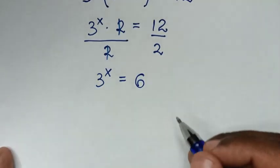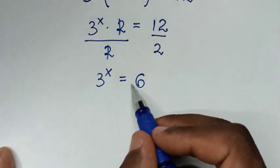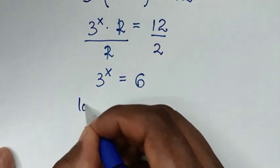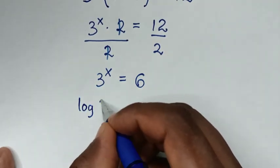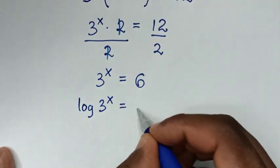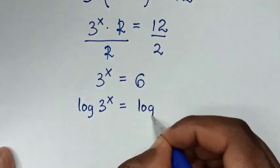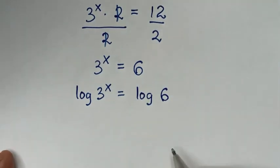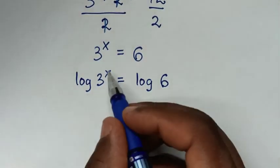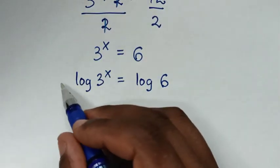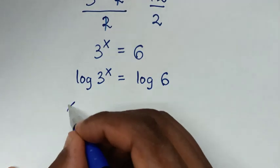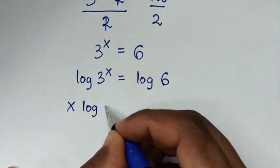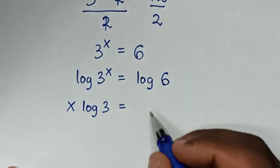From here we'll apply log on both sides. So it will be log of 3 power x is equal to log of 6. Then the power x will move to the front, so it will be x log of 3 is equal to log of 6.